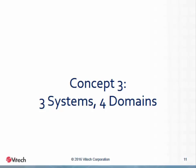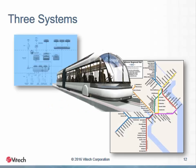Our third concept involves the recognition of three systems and four domains within every design project. There are always three systems that must be considered and managed by the design team. The first is the obvious system — the system of interest — which is the object of the design process. Every design team gives consideration to this system, although sometimes its boundaries are unclear or even misdefined. In the picture here, the subway train is the system of interest. The second system — represented by the map in the lower right — often fails to get adequate attention: that is the context system.